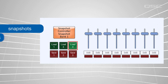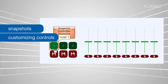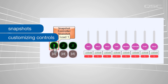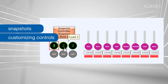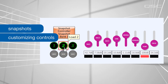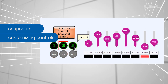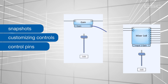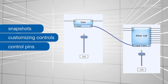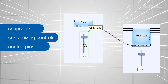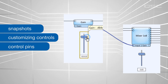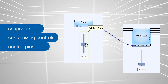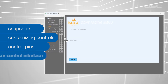Then we'll take a look at how to customize the appearance and behavior of each individual control beyond its default properties in the control panel. Then we'll explore control pins, which allow you to connect controls together so that changing one control can have an effect on one or more other controls.